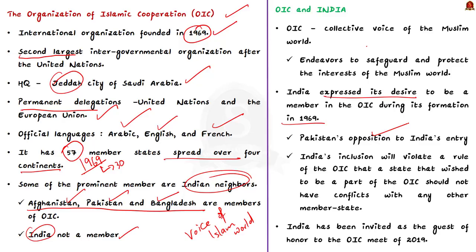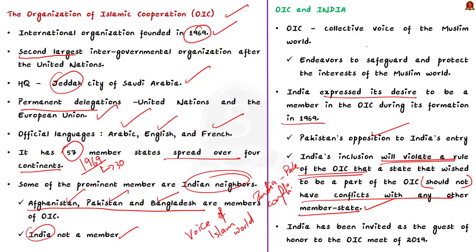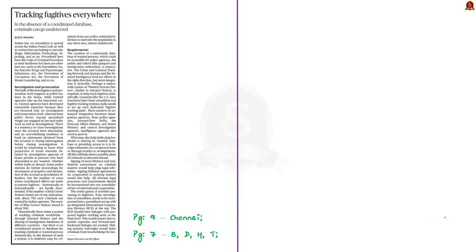Pakistan's opposition to India's entry has prevented it from being a part of the body. According to Pakistan, India's inclusion will violate a rule of OIC that a state wishing to be a part of OIC should not have conflicts with any other member states. Since India has a conflict with Pakistan, it should not be included according to Pakistan. Because of this strong opposition, the OIC has not included India as a member so far. However, India was invited as a guest of honor to the OIC meeting of 2019, and this was considered a diplomatic victory from the Indian side. This brings us to the end of the discussion on the Organization of Islamic Cooperation.